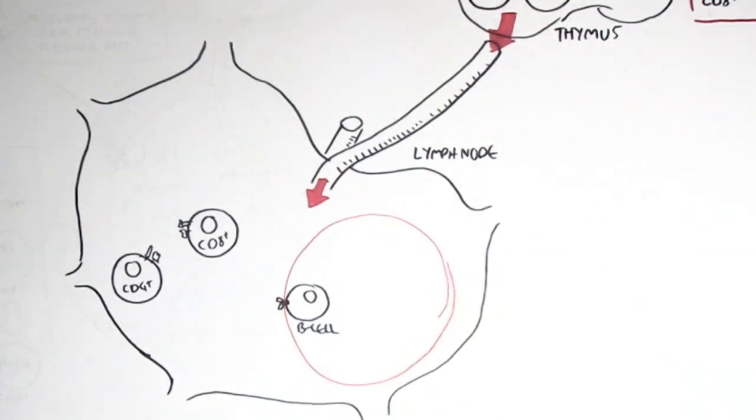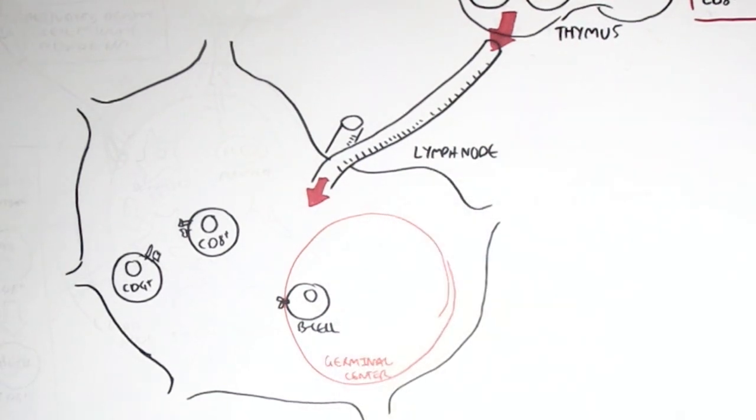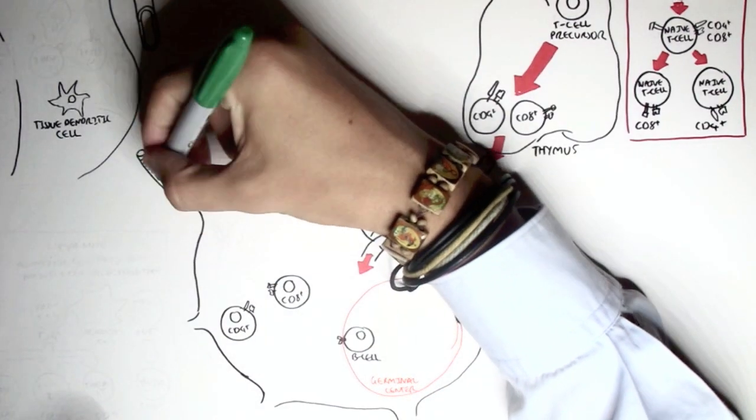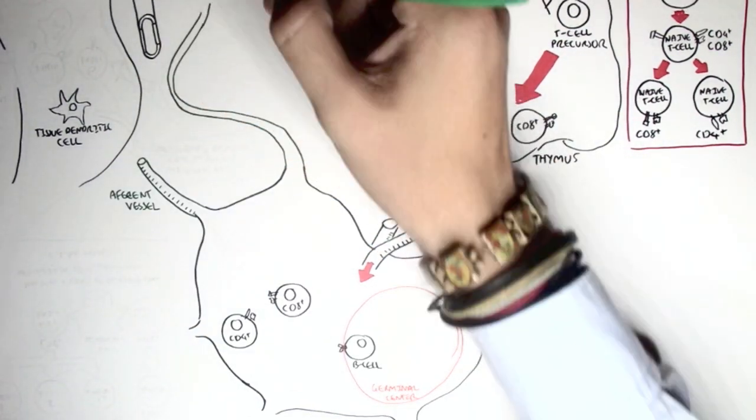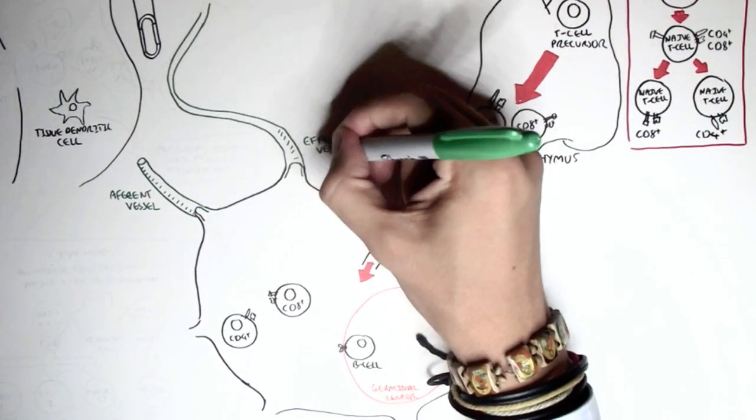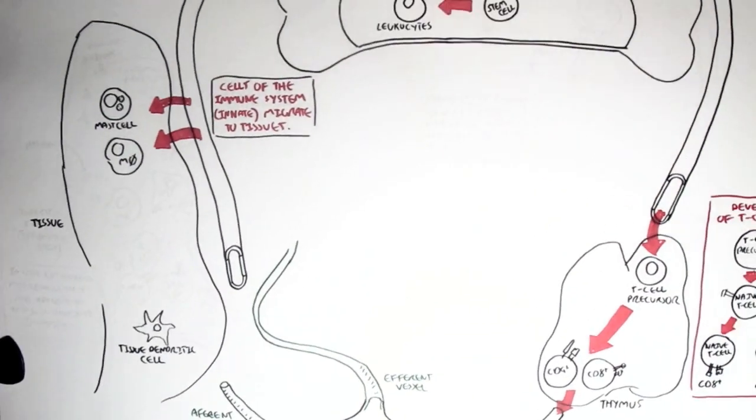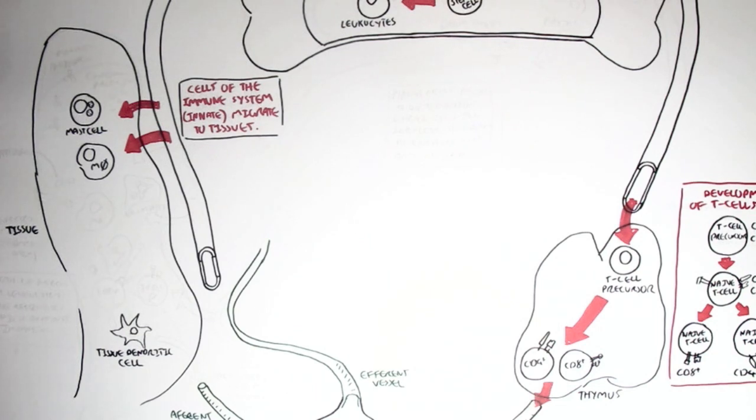And in the lymph node, we also have the germinal center, where the B cell has migrated to. And then we have the afferent vessels, which bring certain cells into the lymph nodes as well. And we have the efferent vessels, which brings activated leukocytes out of the lymph node, typically.